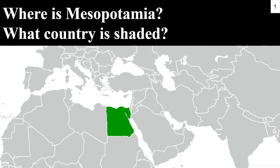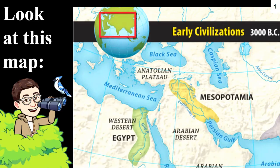Looking at this map, I want you to find where Mesopotamia is. Also, I want you to know what country is shaded in green. If you said the area in the red circle is Mesopotamia, then you're correct. If you said the green shaded area is Egypt, then you're also correct.